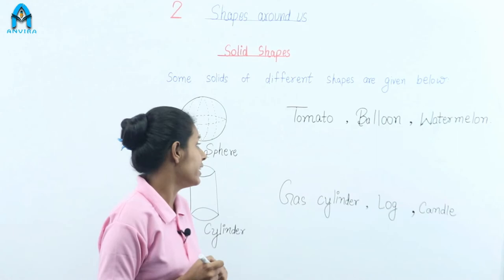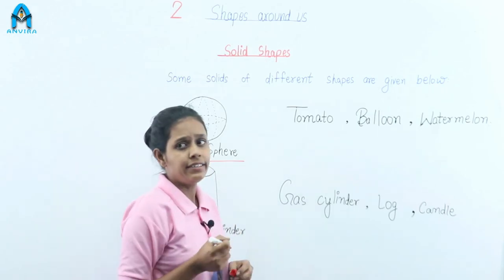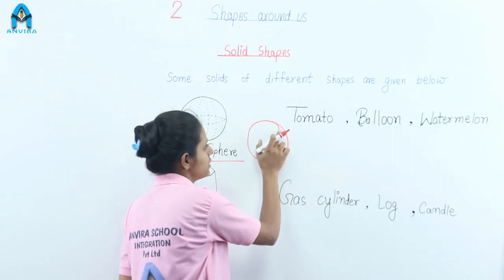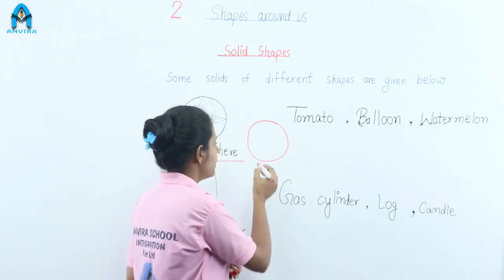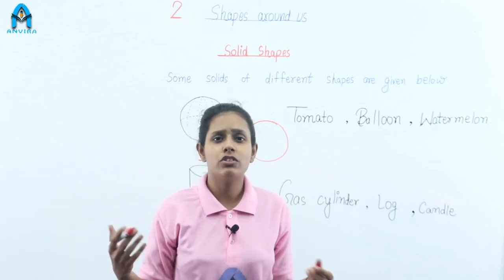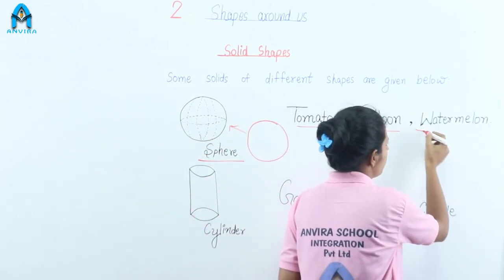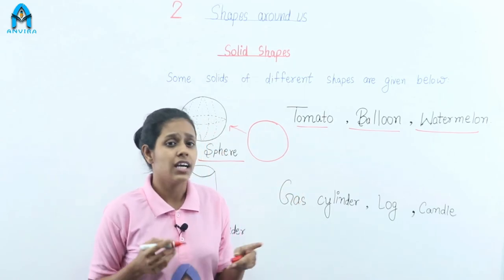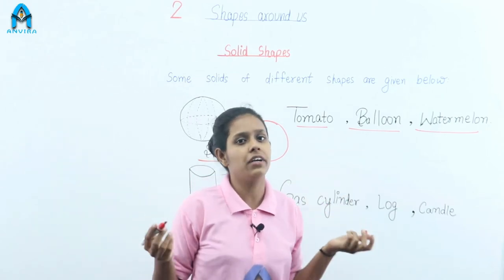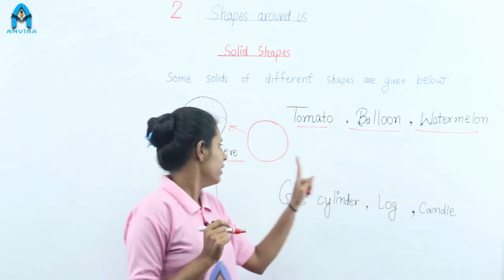Our next shape is a sphere. A circle plane shape makes the solid shape called a sphere. We see many things around us like a tomato, a balloon, and a watermelon — all of these are sphere-shaped.